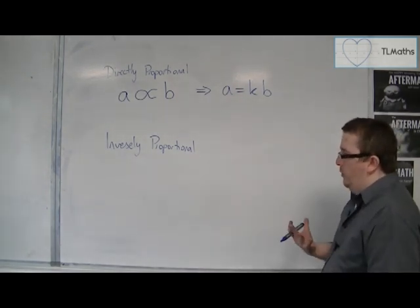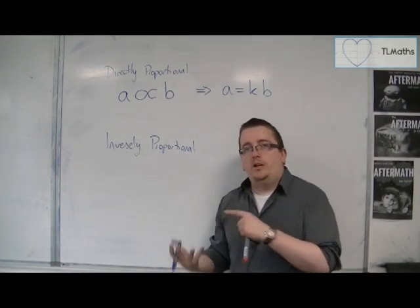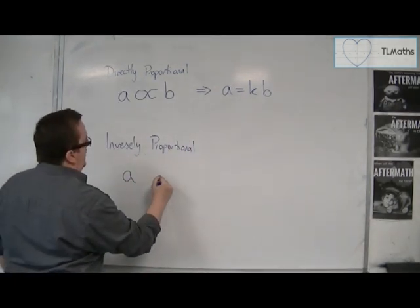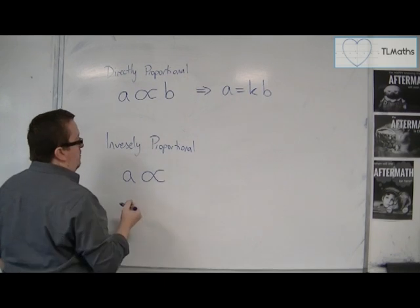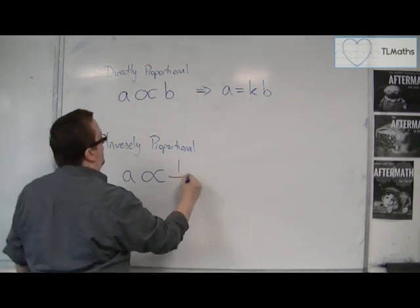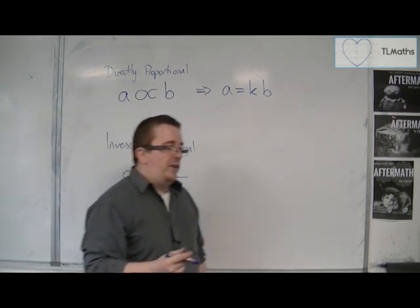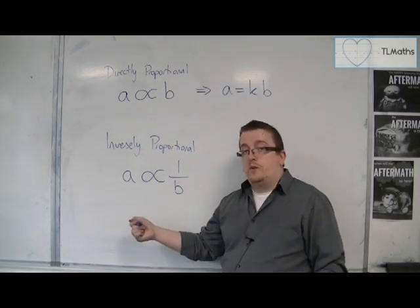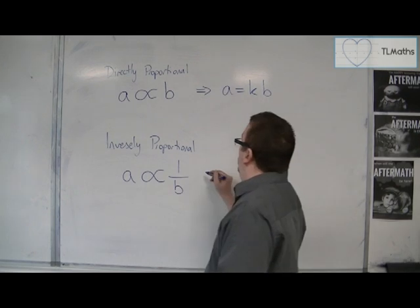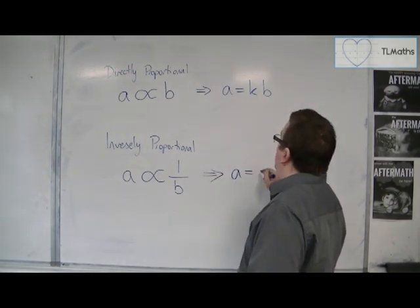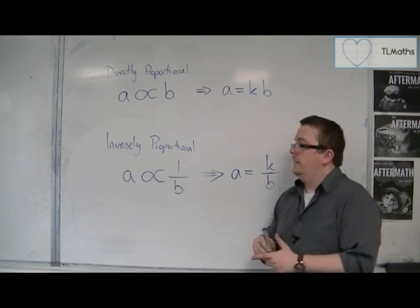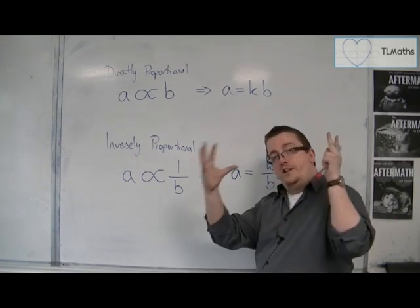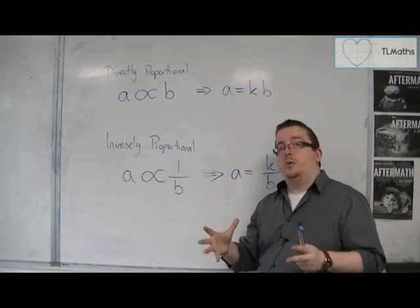If they are inversely proportional, that means that as one increases, the other decreases. We use exactly the same symbol, but A is inversely proportional to B means that as B increases, you have 1 over B, so A would decrease, and vice versa. And so this would give us A is equal to K over B. It's useful to know this in order to understand how we go from a worded problem to a differential equation.